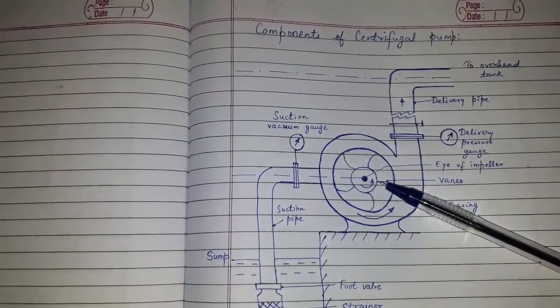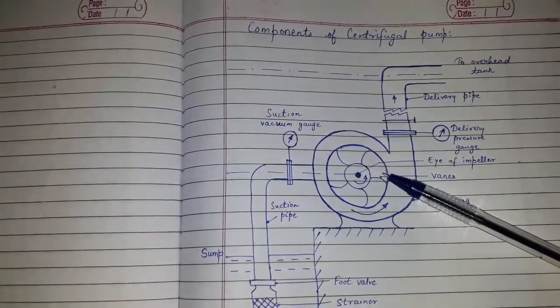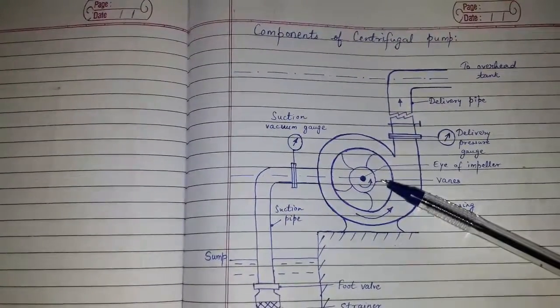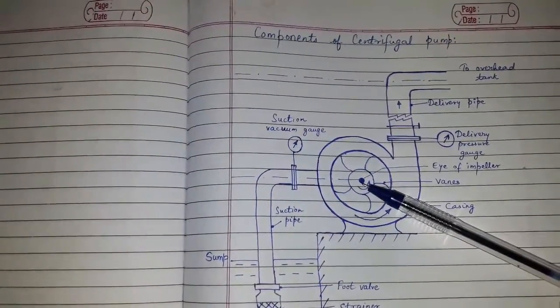The impeller: An impeller is a wheel having backward curved vanes. The impeller is mounted on a shaft which is connected to a motor.